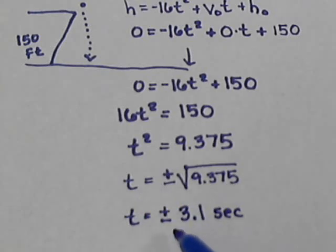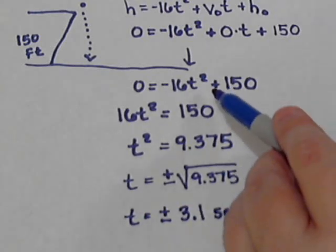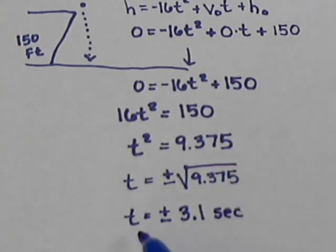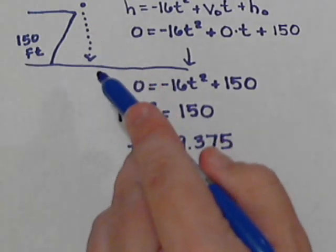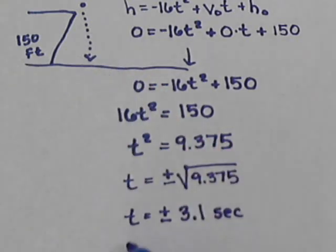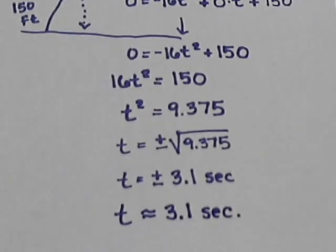Now, these are both answers to this equation. But remember what we're doing. We're trying to figure out how long that anvil is going to take to drop. So in this case, a negative number doesn't make any sense. So we can just discard that and see that when the coyote drops the anvil, it's going to take about 3.1 seconds to hit the ground.